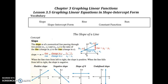So last lesson, we looked at how to graph using standard form of an equation, which was AX plus BY equals C, and we were looking at finding intercepts. Today, we're going to look at the equation Y equals MX plus B, which is called slope-intercept form, and graph from that. Some of you may already be familiar with it.